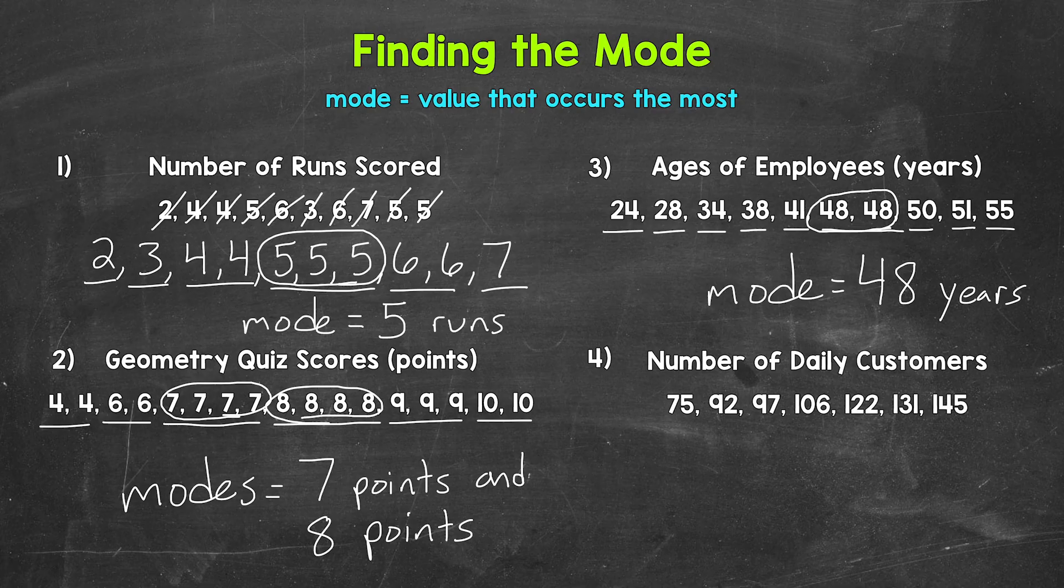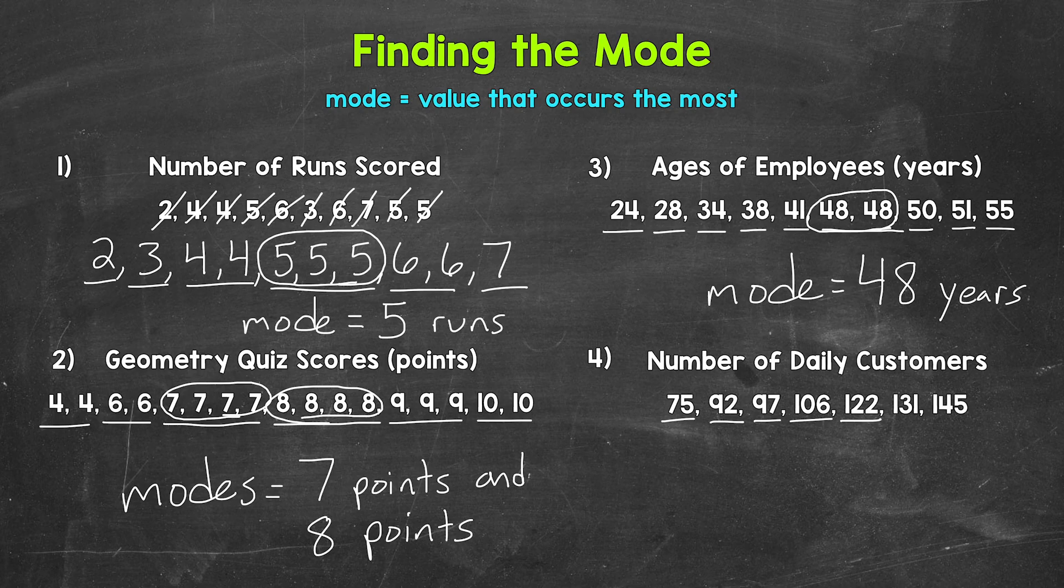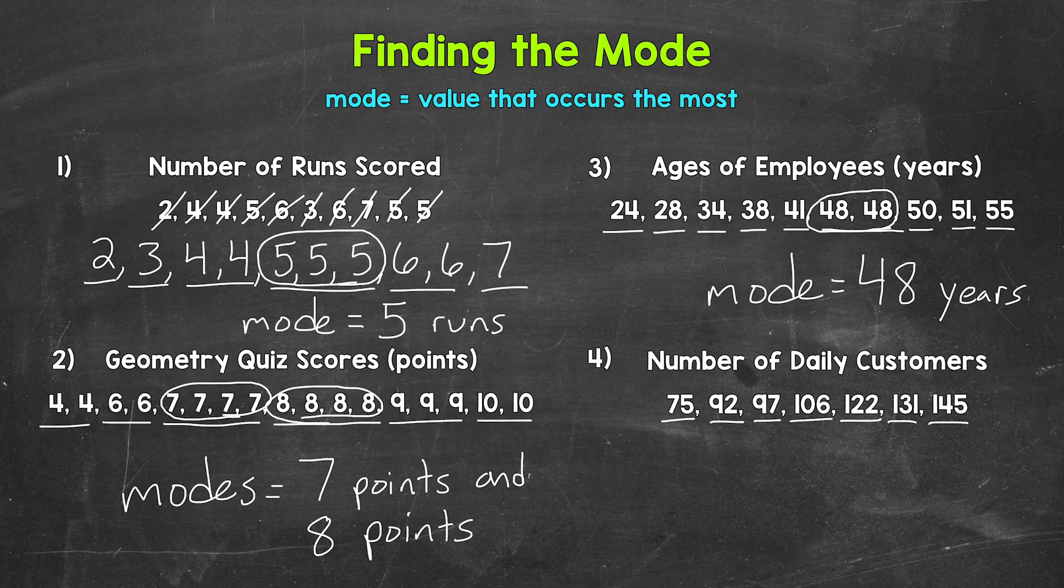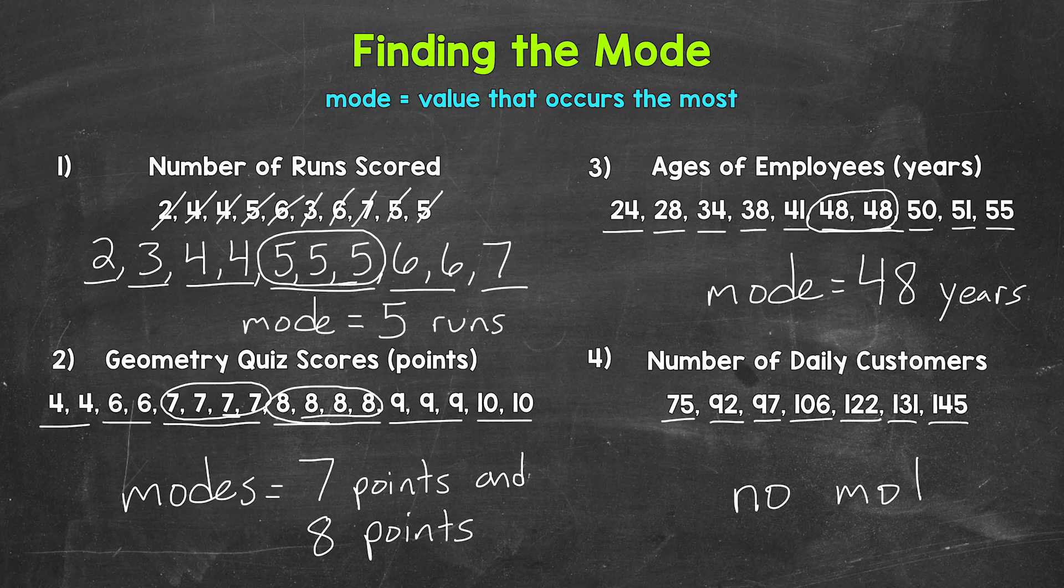Lastly, let's move on to number 4, where we have the number of daily customers at a restaurant over the past 7 days. Which value occurs the most? What's the mode here? Well, 75 once, 92 once, 97 once, 106 once, 122 once, 131 once, and 145 once. Well, each of these values occurred just once. We don't have any values that occur more than the others here. So we don't have a mode. Let's put no mode.